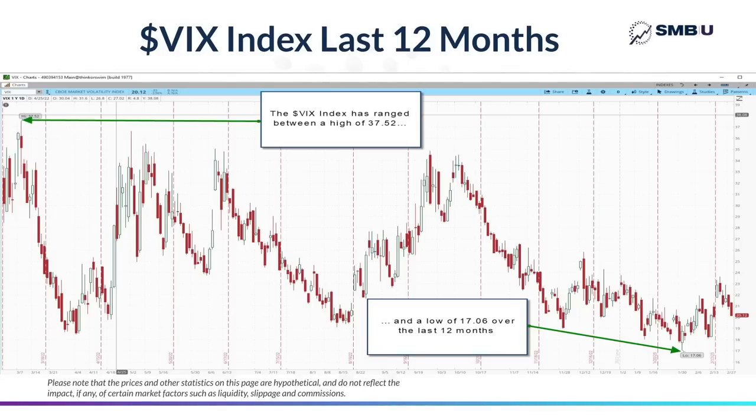And we also realized that a certain option strategy was going to be ideal for profiting from this thesis, because this strategy is very forgiving and doesn't draw down much if the market doesn't immediately sell off once it fell into the 17 to 20 range.